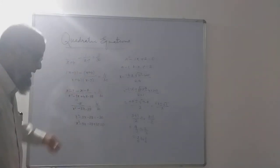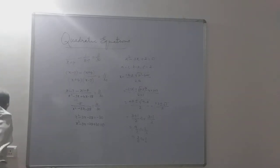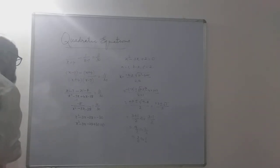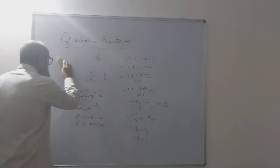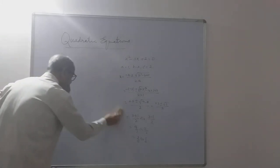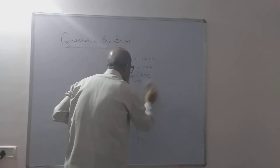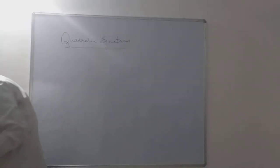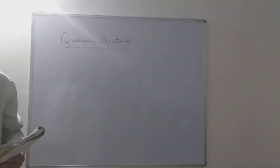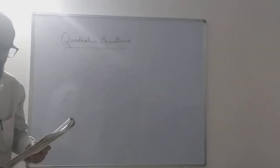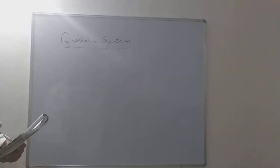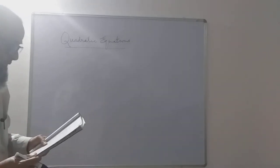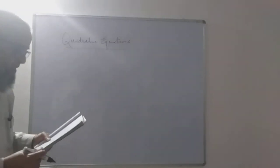I hope it is clear to you. Now we will take a problem given in the form of a sentence: the diagonal of a rectangular field is 60 meters more than the shorter side. If the longer side is 30 meters more than the shorter side, find the sides of the field.